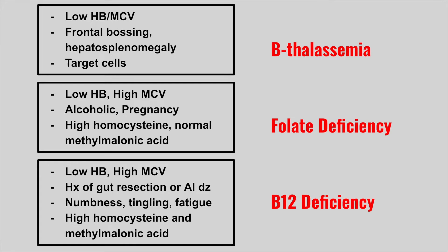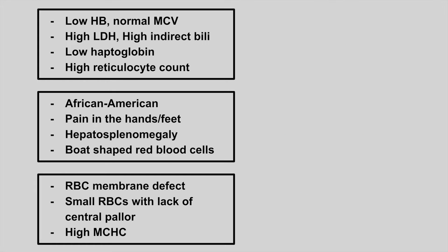Remember, B9 and B12 deficiencies are always compared to each other. The key difference is folate does not have neurologic symptoms but B12 does. B12 deficiency tends to happen over years, while folic acid deficiency is more short-term. Vegans are at higher risk for B12 deficiency. B12 deficiency is the one associated with pernicious anemia, where antibodies against intrinsic factor prevent B12 absorption in the terminal ileum.